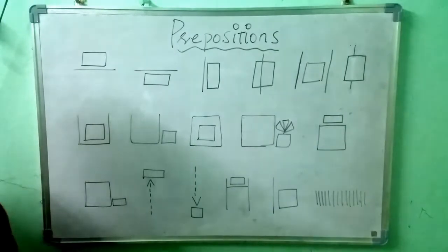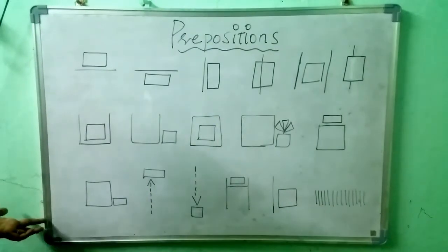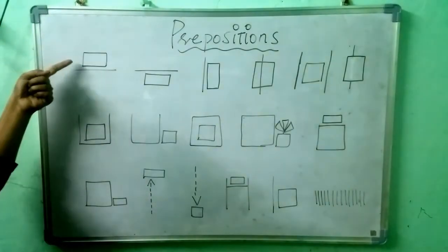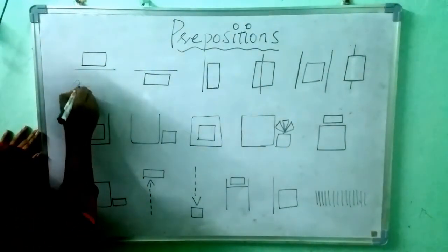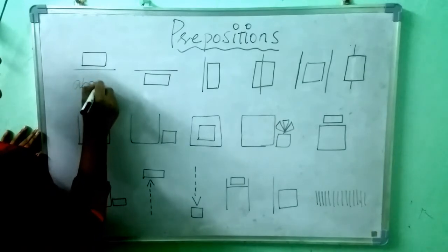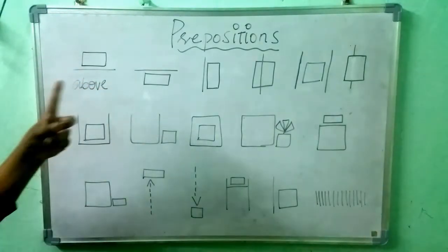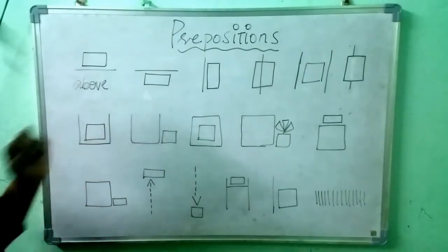Prepositions. Here we have given some examples. This box is above, and this box is below.